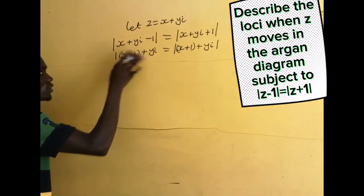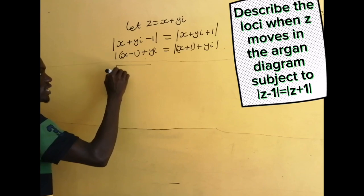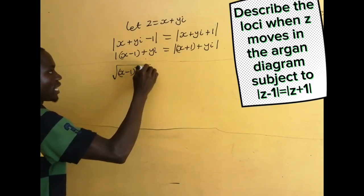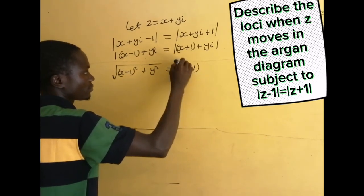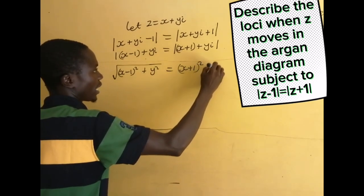Now, the absolute value of this is the same as the square root of (x - 1)² + y², which is equal to the square root of (x + 1)² + y².